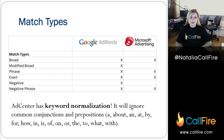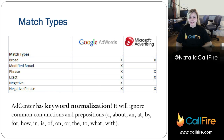Another quick thing is AdCenter has keyword normalization, so it will automatically ignore common conjunctions and prepositions — words like a, and, what, with. For example, if you have a phrase called 'what is', both of those words are going to be thrown out because they are noise words, and that's something to keep in mind both for negative match and for positive match.